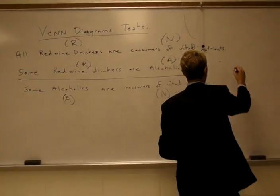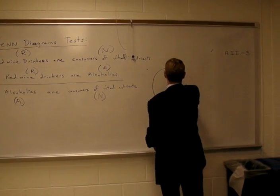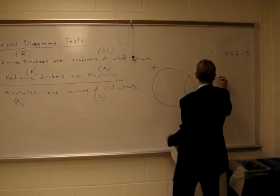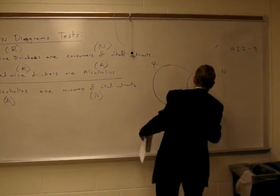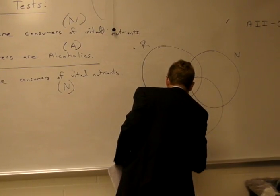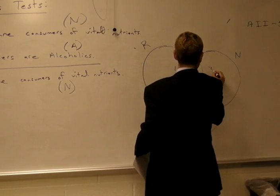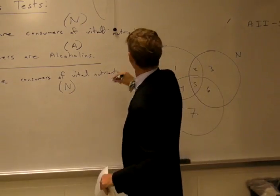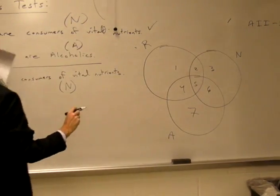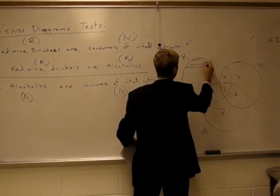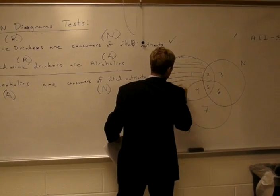Now let's diagram this one. And via this one you're going to see just how important the placement of the middle term is. As a matter of fact, it ends up making much of the difference between validity and invalidity. Now, our first premise is like so. All red wine drinkers are consumers of vital nutrients.